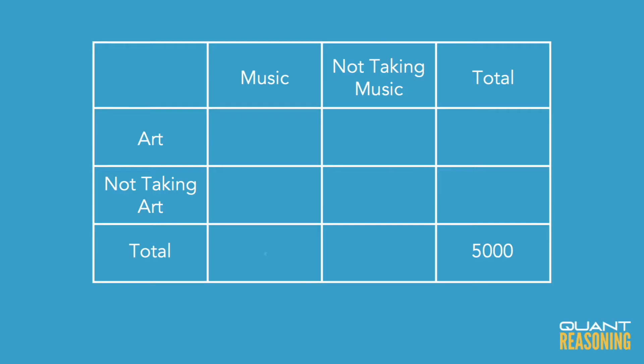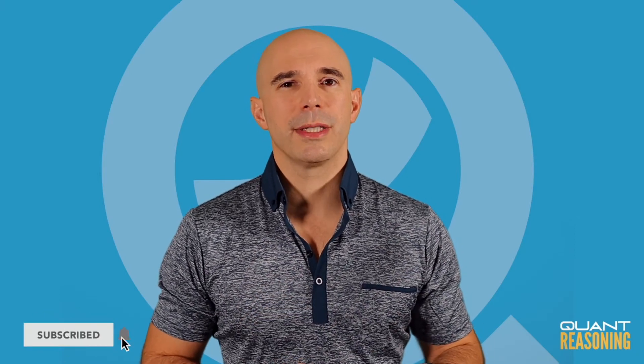So we can start filling in the information from the question stem. We would put x in the cell that represents all of the students that take music, y in the cell that represents all of the students who take art, and z in the both cell — the cell that represents both art and music.